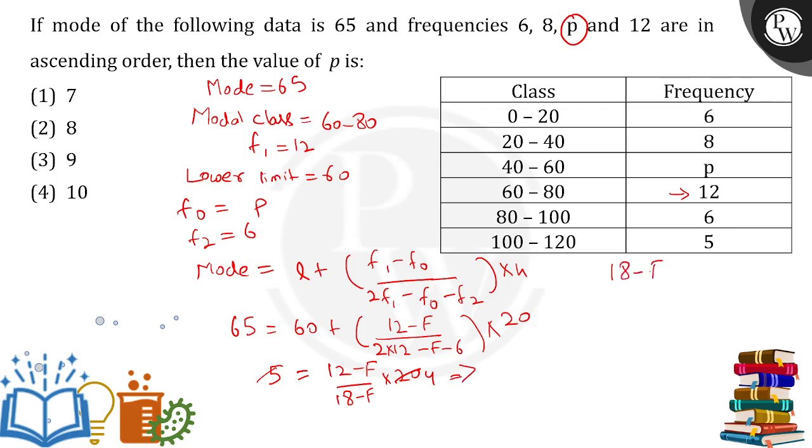18 minus f equals 48 minus 4f. 4f going on the other side, we will be having simply 3f.